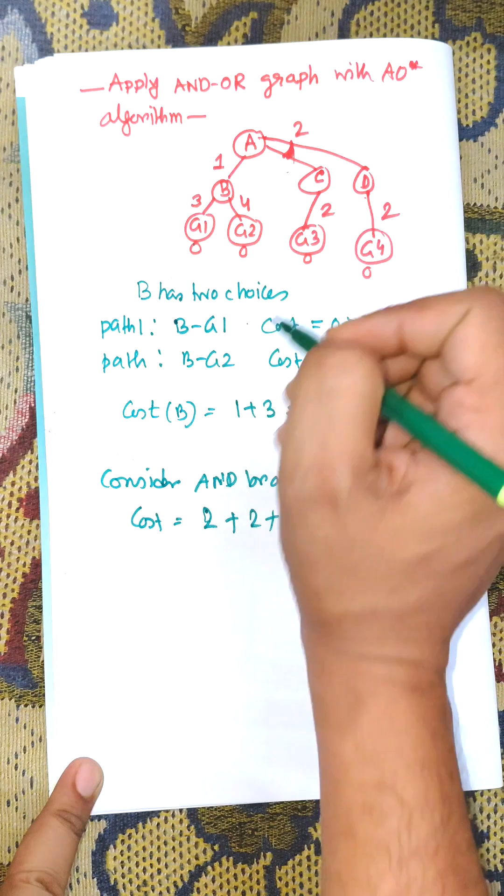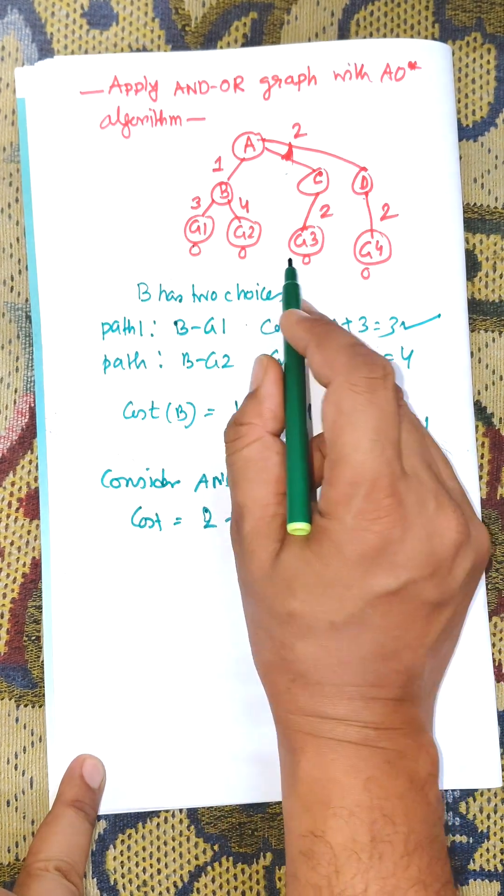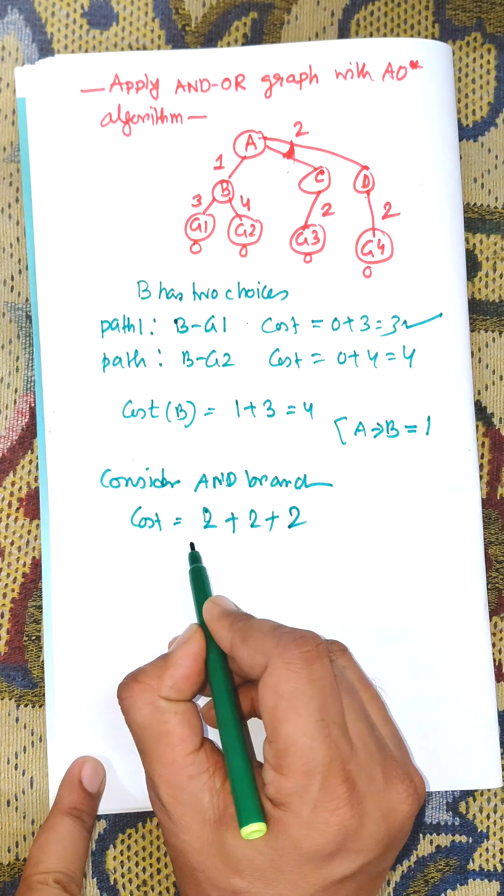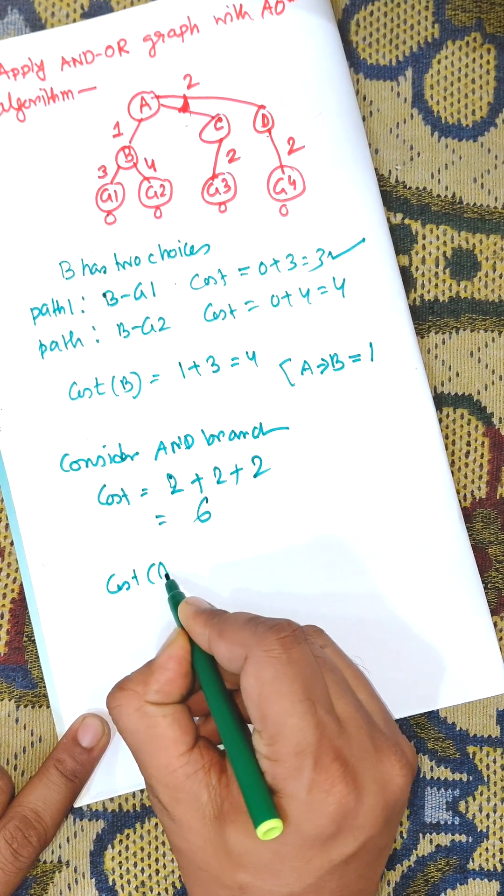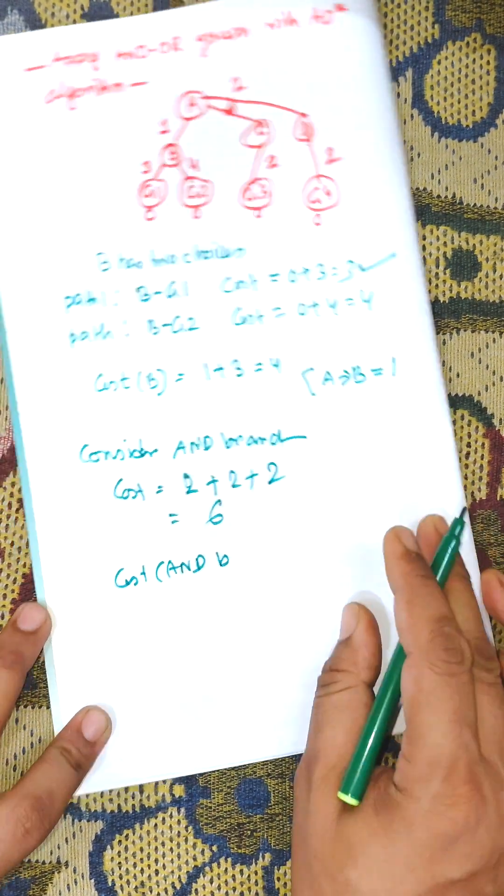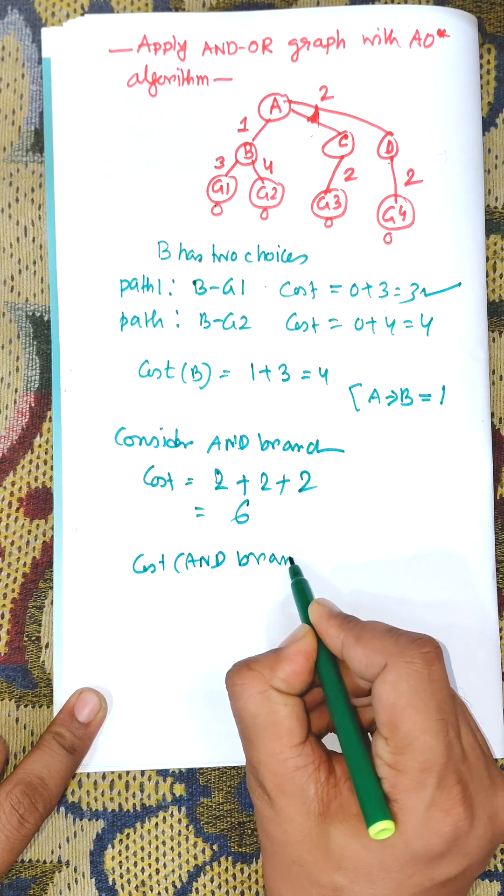And another is B to G is 2. AND means plus, adding those and heuristic values 0 and 0, so that is total cost equal to 6. The cost of AND branch is equal to 6.